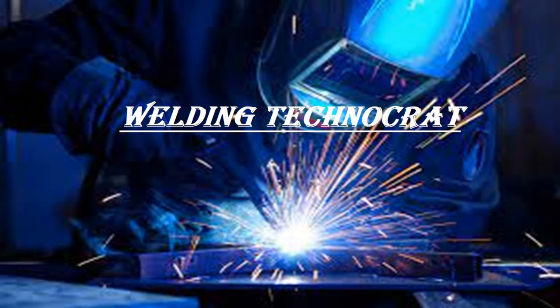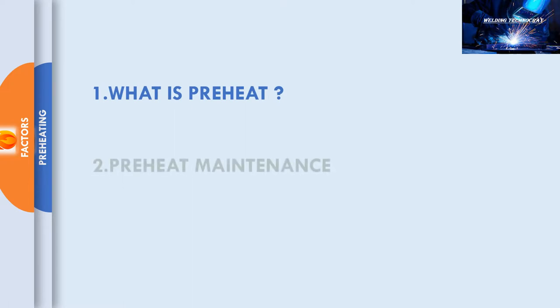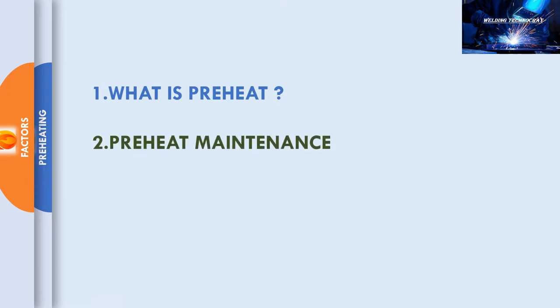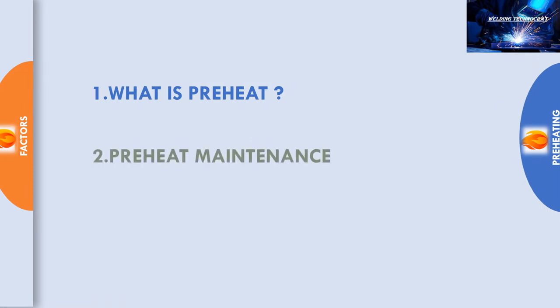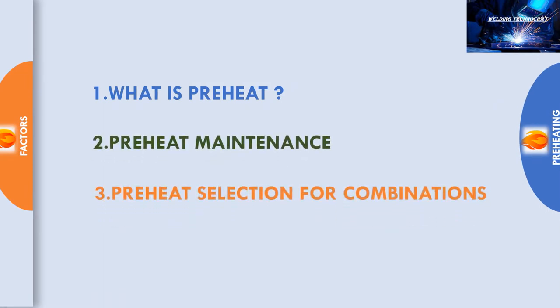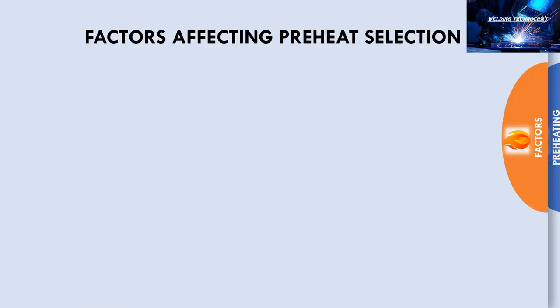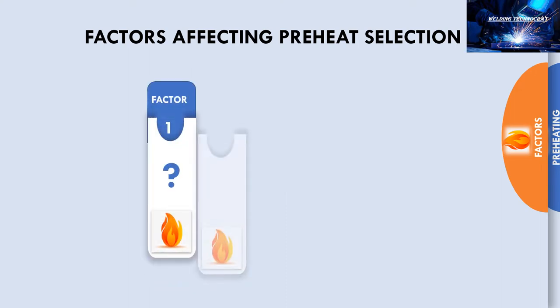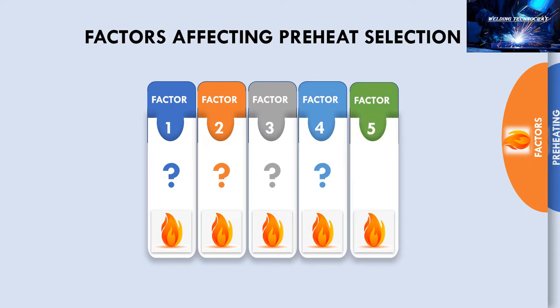Welcome to the Welding Technocrat YouTube channel. In the previous two separate videos we had learned in detail what is preheat and what is preheat maintenance. In another video we had studied how preheat is selected for three types of combinations, namely thickness, P-numbers, and base metal but different strength. Today we are going to learn what are the five factors affecting the selection of preheat.